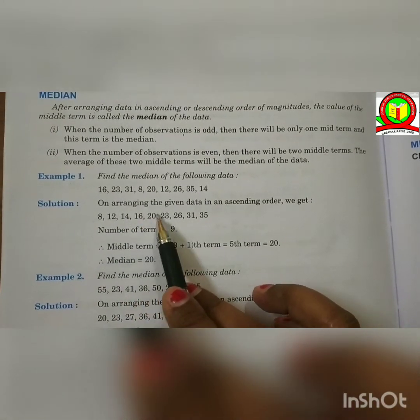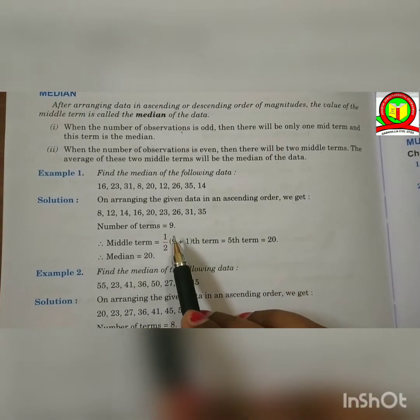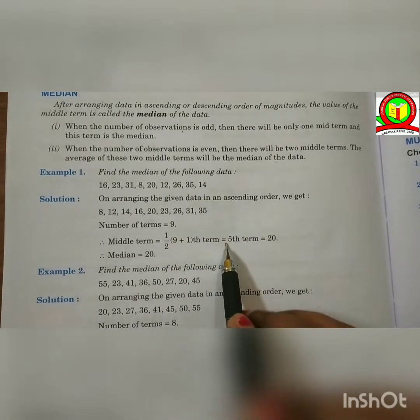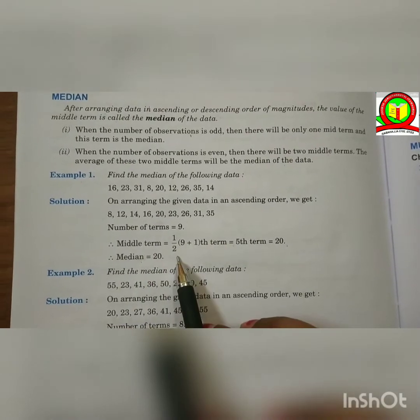So, number of terms is equal to 9. Middle term is equal to one half times (9 plus 1)th term is equal to 5th term is equal to 20. So, the median is 20.